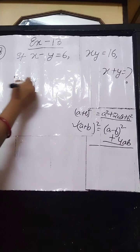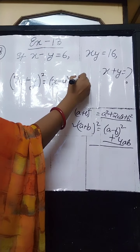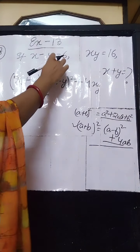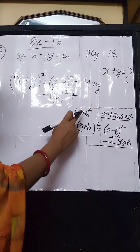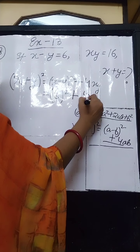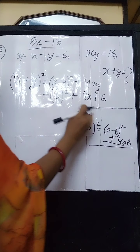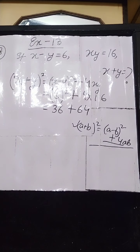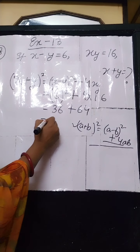We apply the formula: (x+y)² = (x-y)² + 4xy. We replace x minus y with 6 and xy with 16. So we get 6² + 4×16, which is 36 + 64.